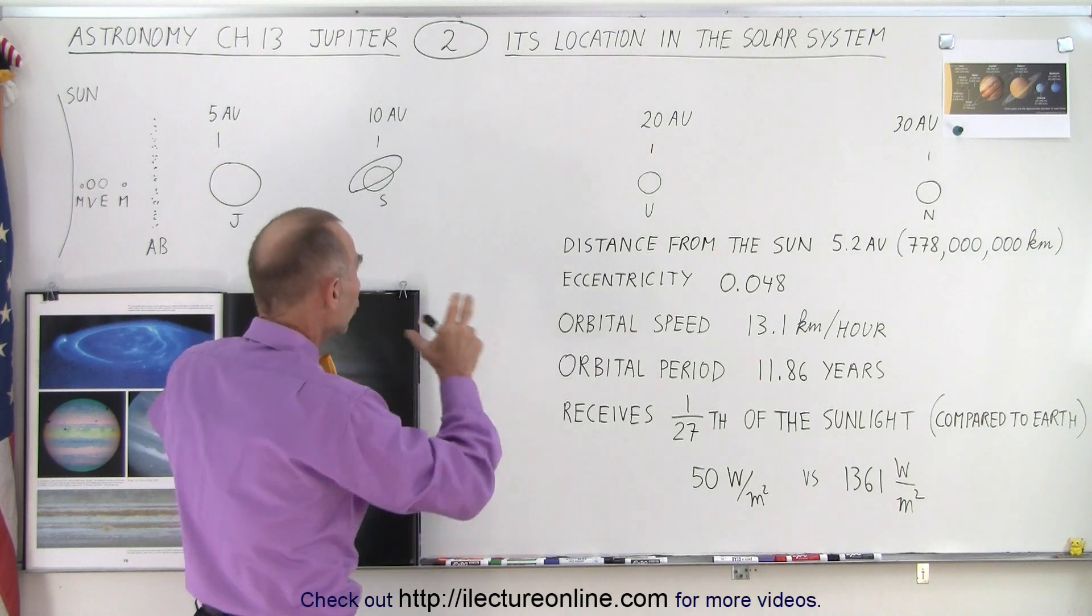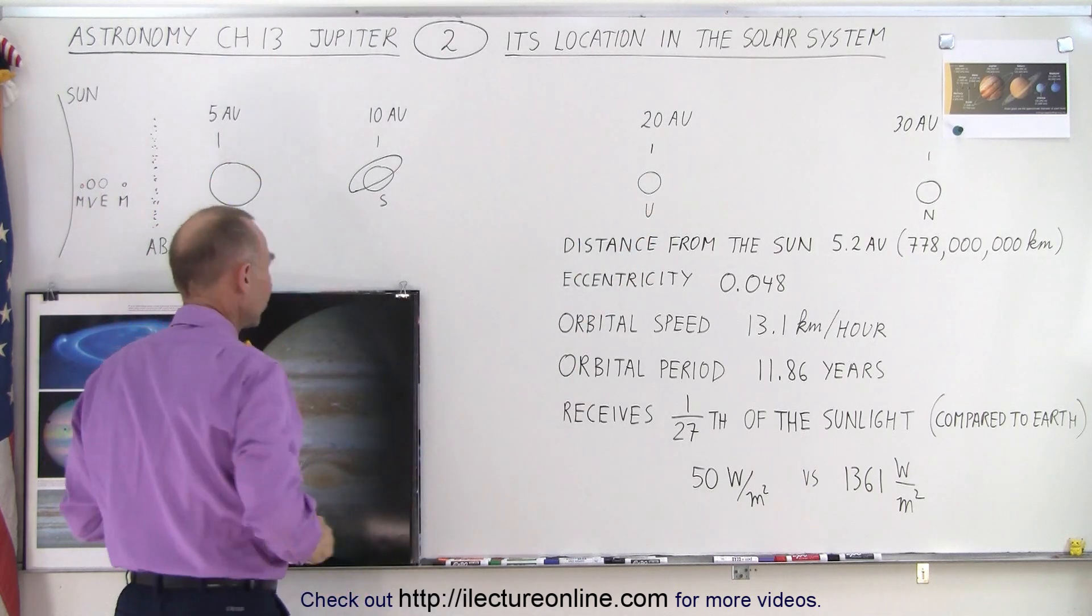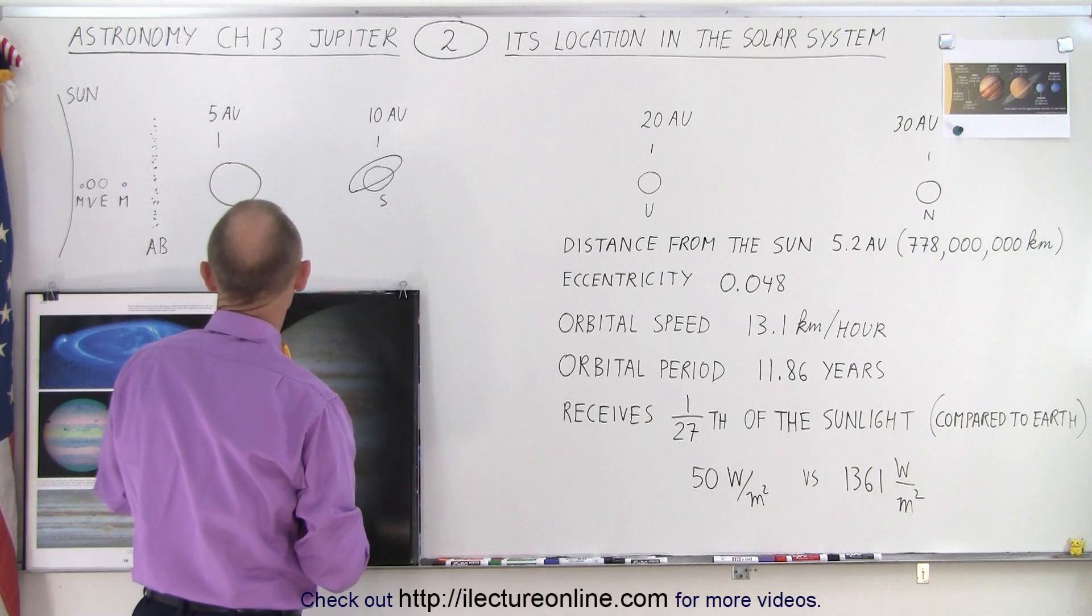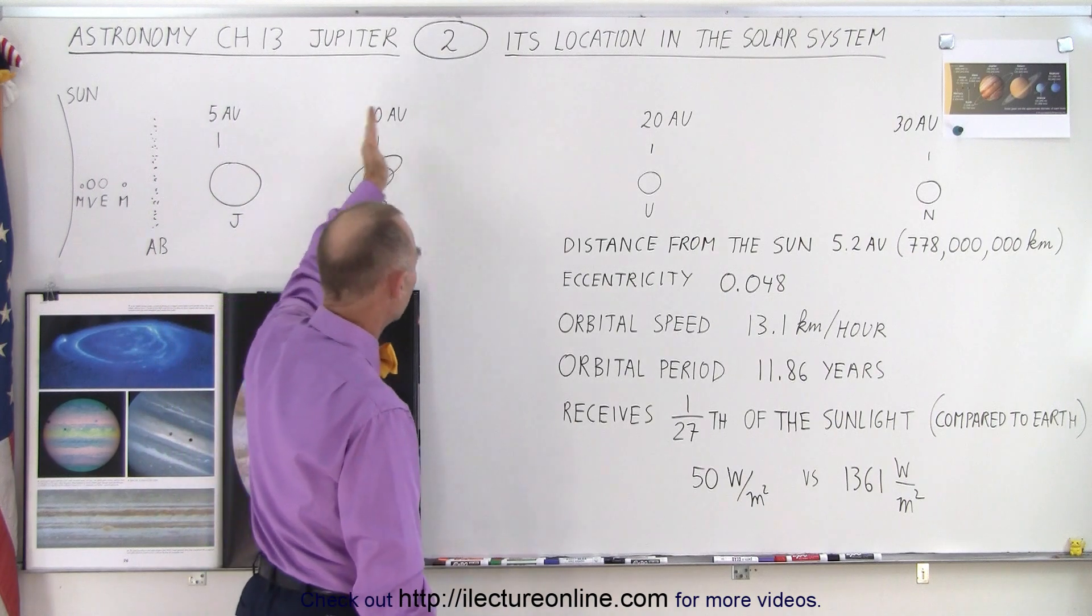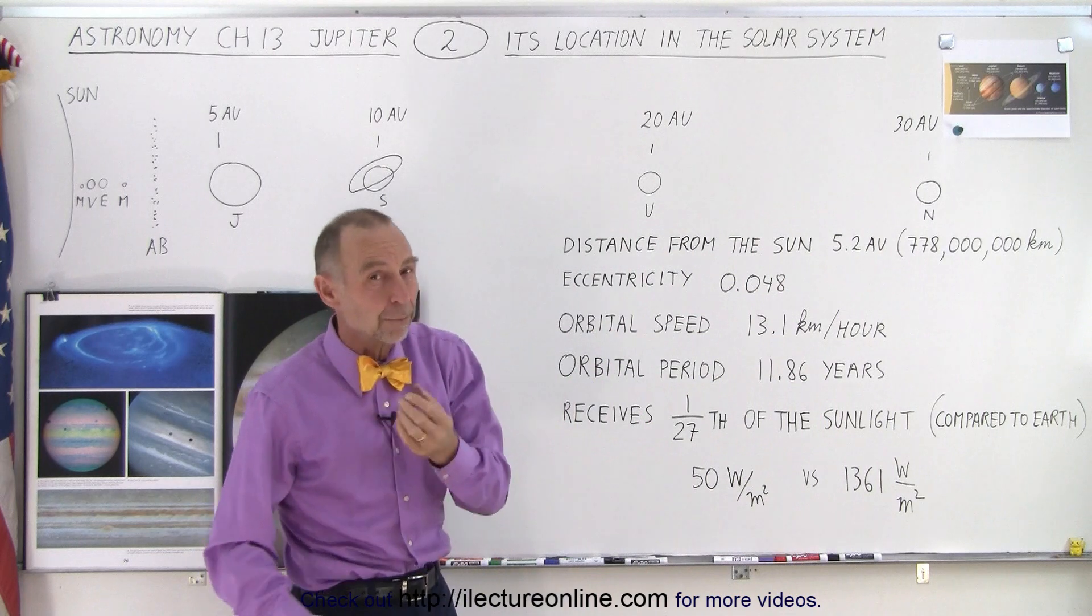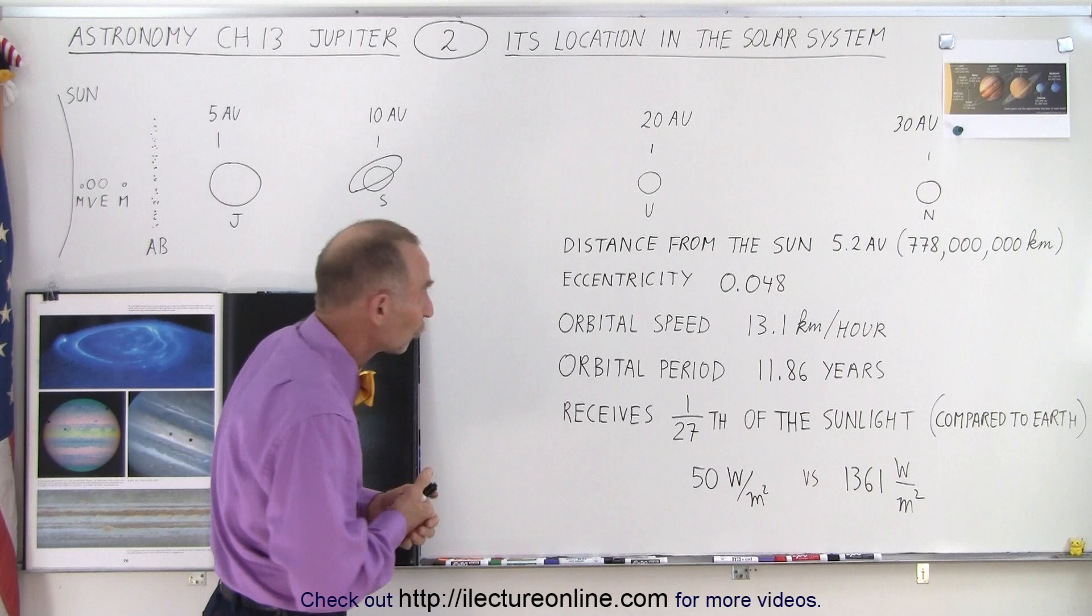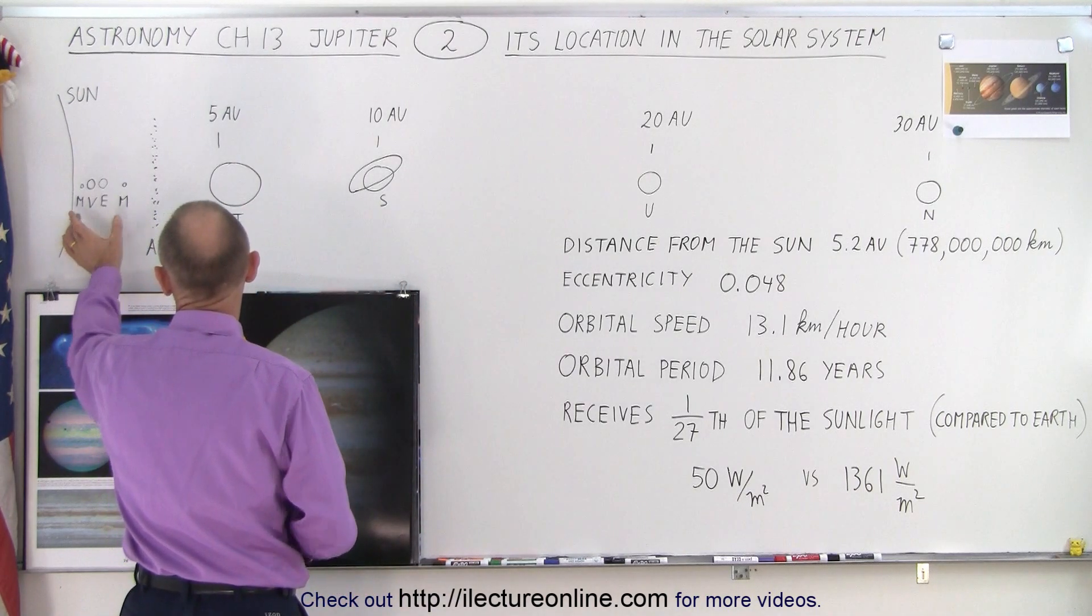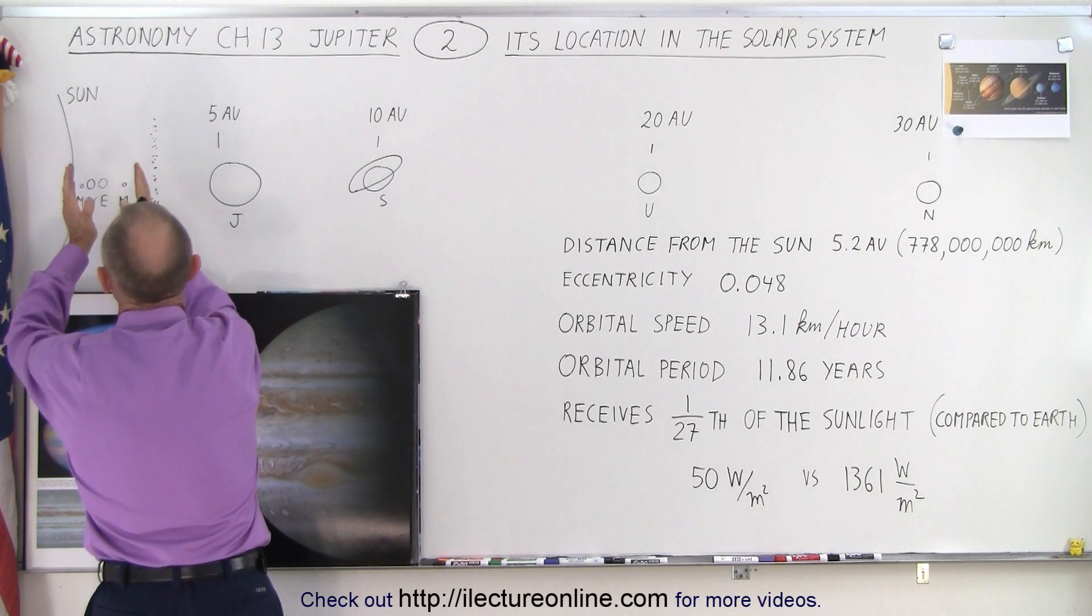But another big difference is the huge spacing and size of the outer solar system compared to the inner solar system. Now I've tried to give you a scale feel for it. Notice we have the sun right here. Here we have 5 astronomical units, 10 astronomical units, 20 astronomical units, and 30 astronomical units. Remember an astronomical unit is the distance between the earth and the sun, about 150 million kilometers or about 93 million miles. Notice that the inner solar system is all bunched up within about 1.6 astronomical units from the sun, very close together.